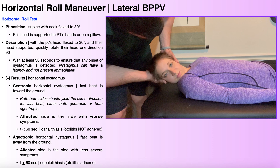Now let's look at ageotropic nystagmus. If geo is toward the ground, ageotropic — where 'a' means opposite — means toward the ceiling. The fast beat is away from the ground, or toward the ceiling. So that would look like this: fast beat up, slow back — the same in both eyes, repeatedly. That would be ageotropic nystagmus.